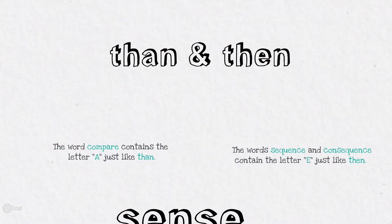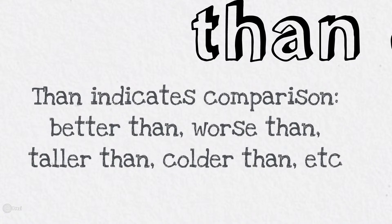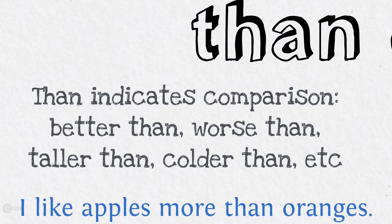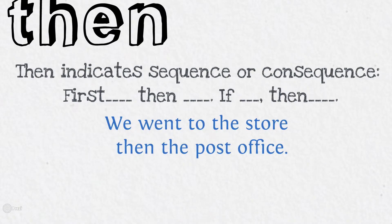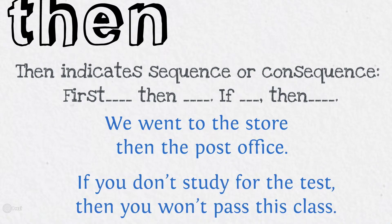Than and then. Than indicates comparison: better than, worse than, taller than, colder than, etc. For example: 'I like apples more than oranges.' Then indicates sequence or consequence — 'first blank, then blank' or 'if blank, then blank.' For example: 'We went to the store, then the post office.'